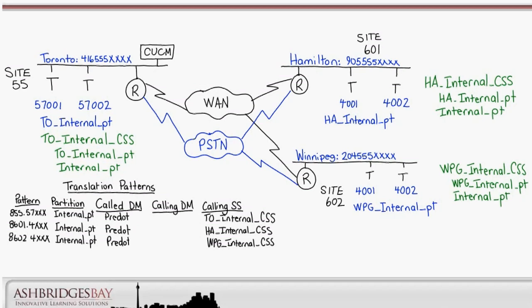Let's recap the design. We have the Toronto, Hamilton, and Winnipeg sites. The Toronto site uses five-digit extensions in the range 57XXX. The Hamilton and Winnipeg sites have overlapping four-digit extensions in the range 4XXX. The extensions are used for the DNs at each site. So, for example, extension 57001 in Toronto has the DN for line 1 configured as 57001. Toronto numbers are in the Toronto internal partition, Hamilton numbers in the Hamilton internal partition, and Winnipeg numbers in the Winnipeg internal partition.